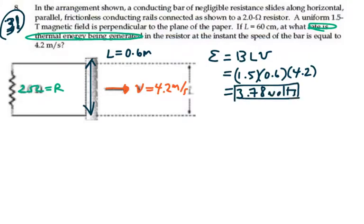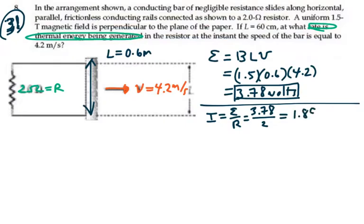Since we only have the resistance of that resistor, our current will be equal to our EMF voltage divided by the resistance. 3.78 volts divided by 2 ohms is going to be 1.89 amps.